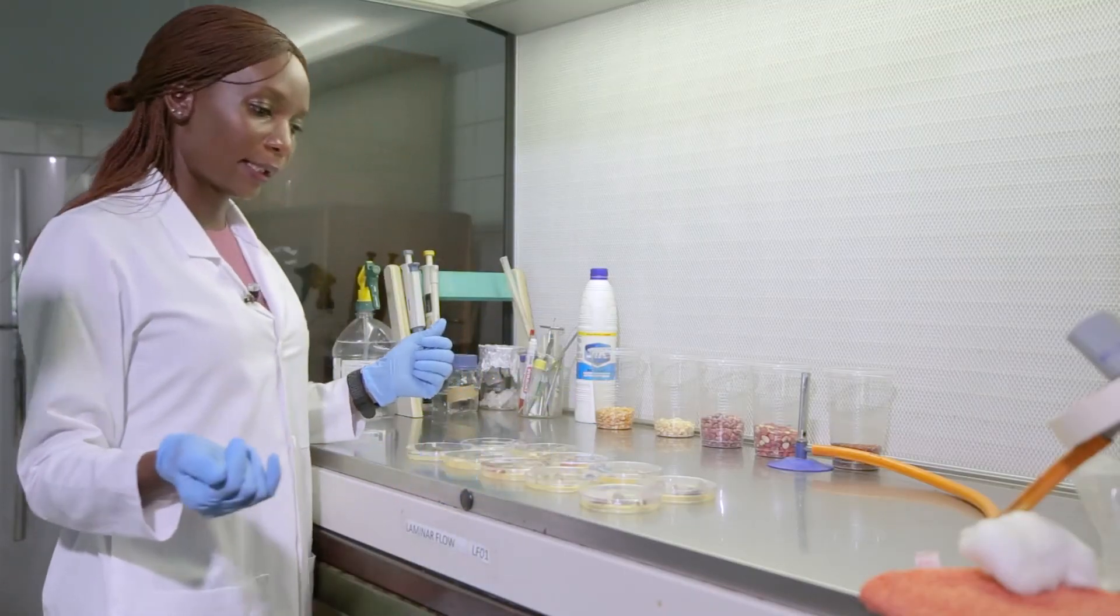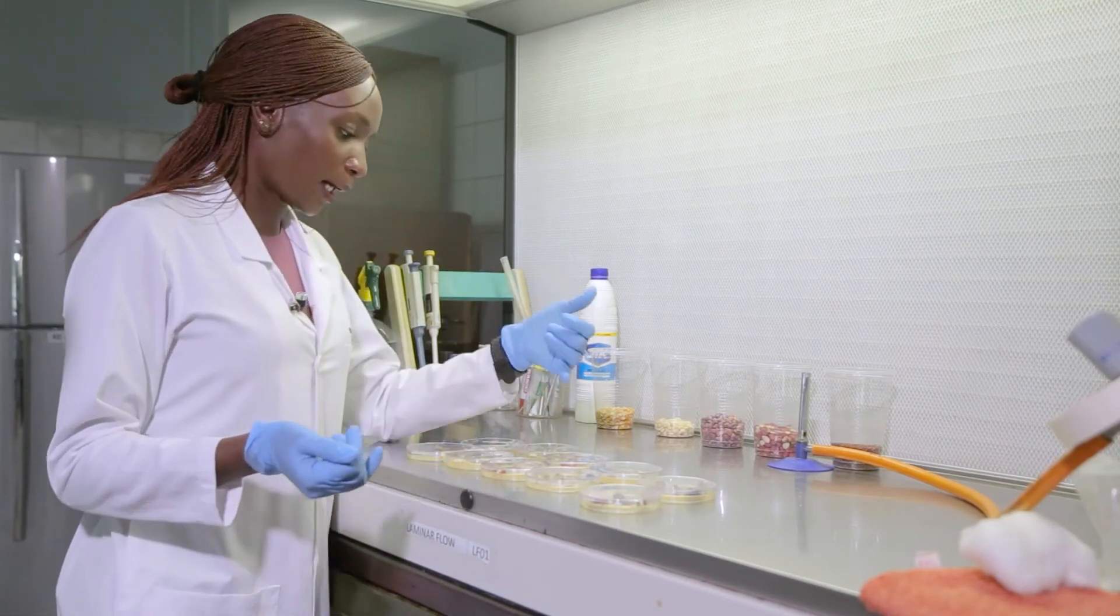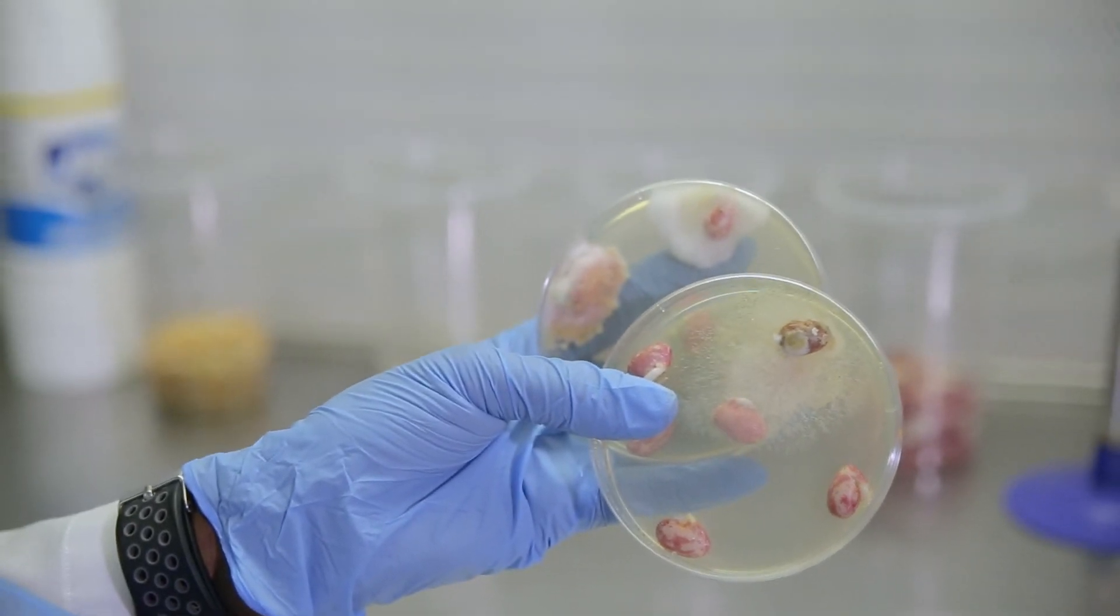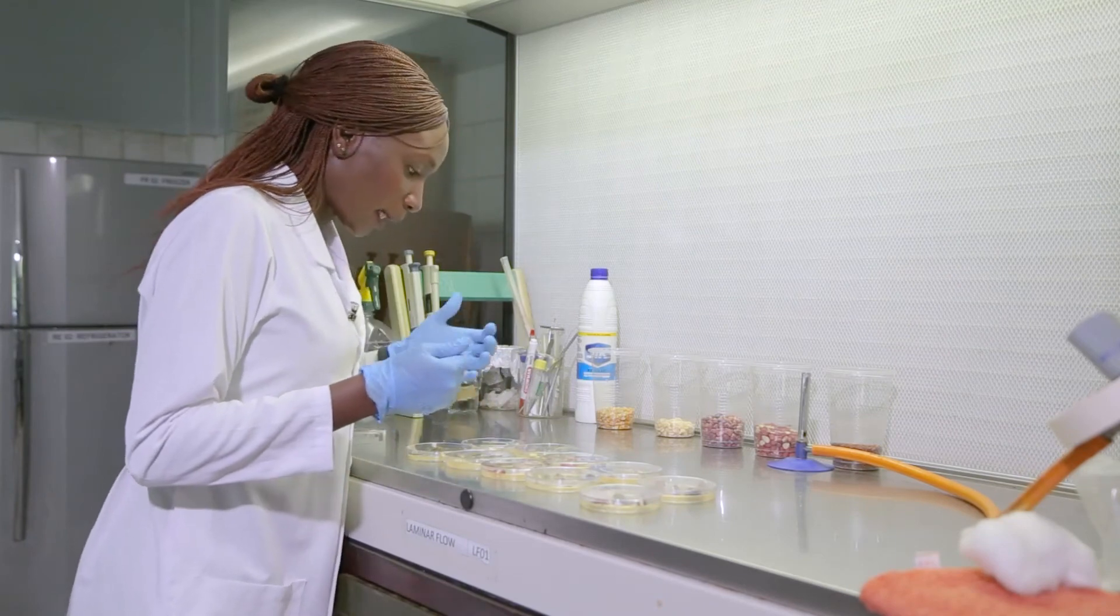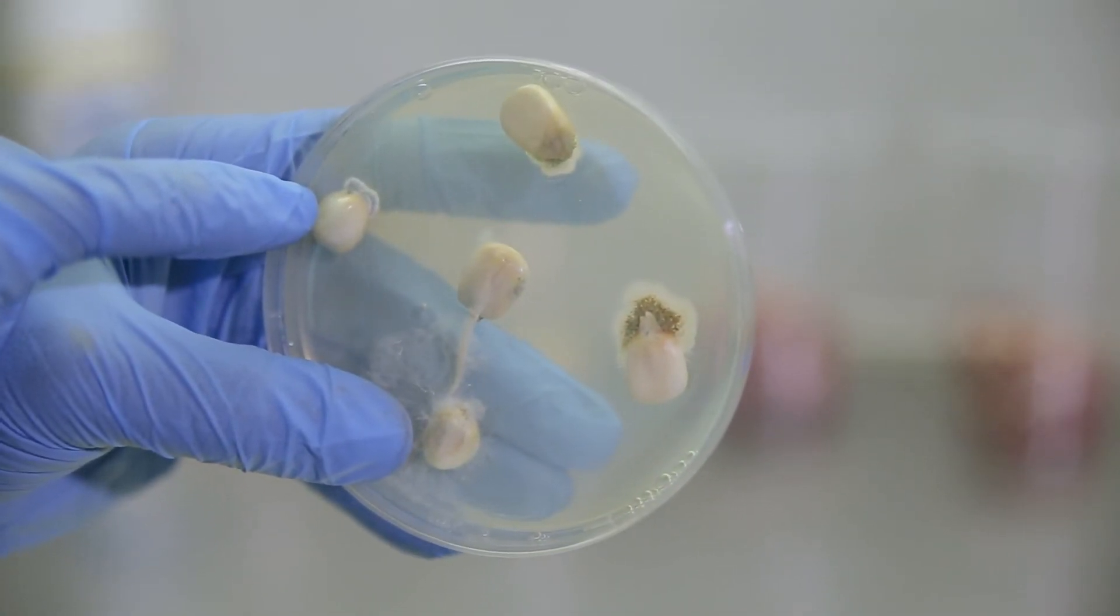The black one, I said most likely Aspergillus niger. And then we do have the white mold also, which may presumptively be Mucor or Fusarium. And then I have seen what is most likely to be Penicillium. It's that dark green mold we see in there.